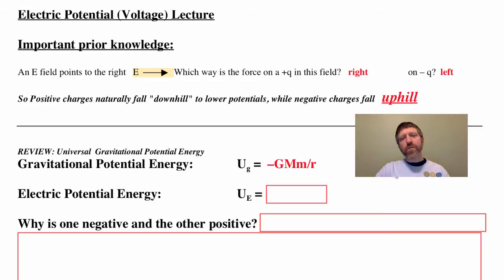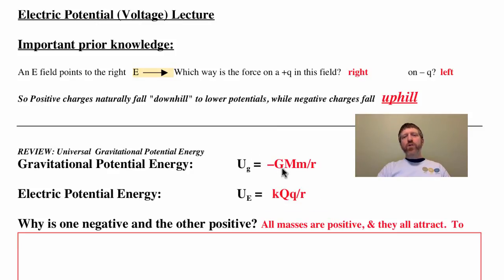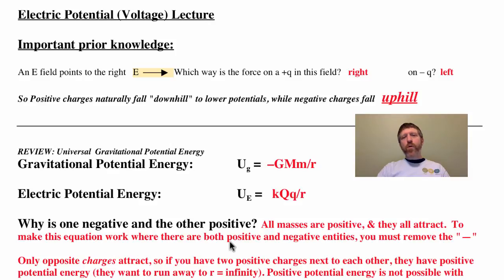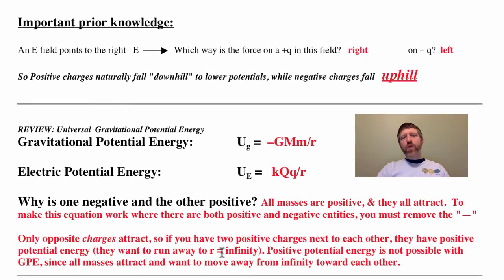Similarly, electric potential energy is k Coulomb constant, charge one, charge two, over the center to center distance between them. Also only true if you set r equals infinity to where we're going to set electric potential energy to zero. Now you might ask why is this one negative and this one is positive? When you have gravitational attraction, all masses are positive so they attract. But what do two charges of the same sign do? They repel. So what we have to do to make this equation work where there are both positive and negative charges, you got to remove the negative sign.